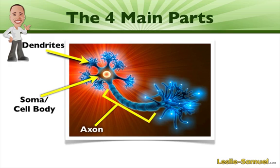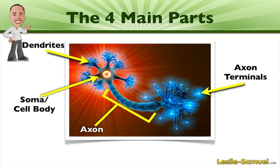Then we have the axon which is where the signal actually originates so that it can be sent all the way down to the axon terminals. And the axon terminals are the points where it connects with other neurons and sends signals to those other neurons by releasing neurotransmitter. And we're going to get into that in a later tutorial.